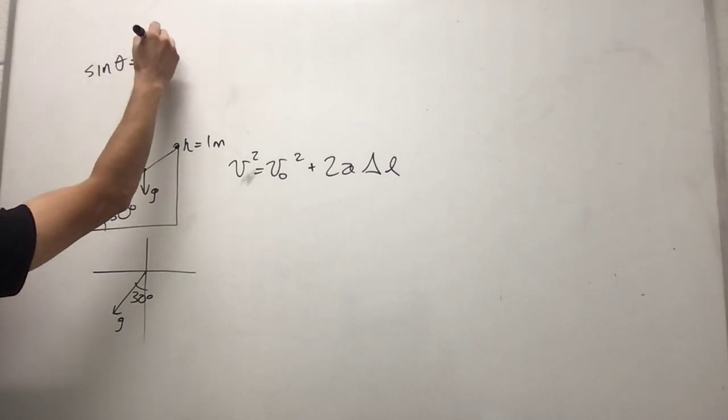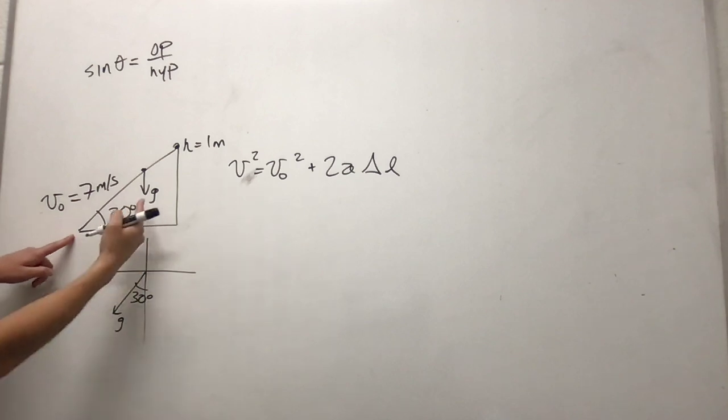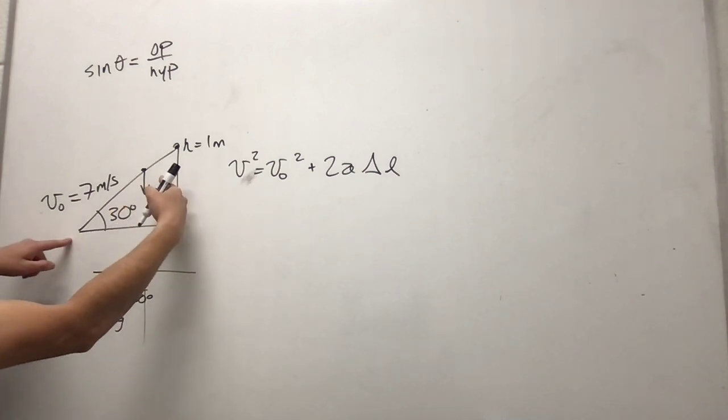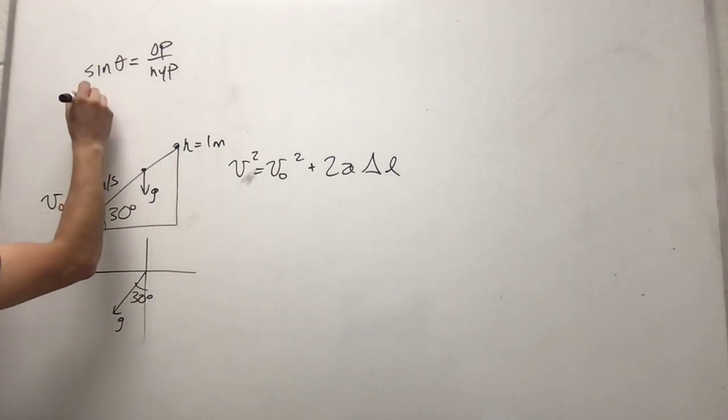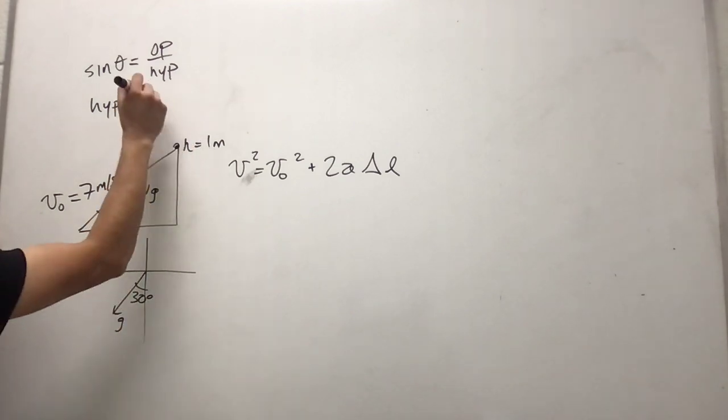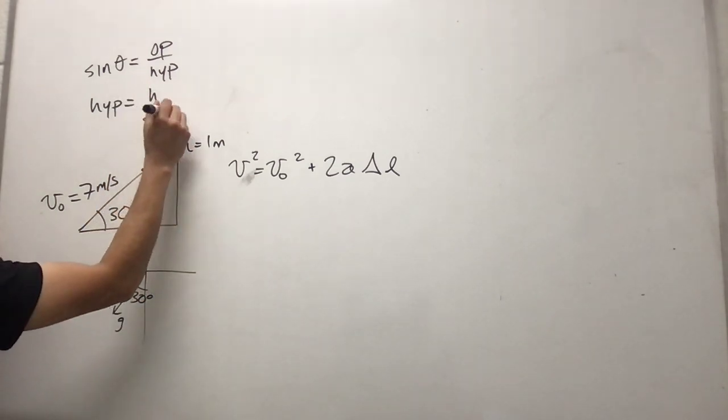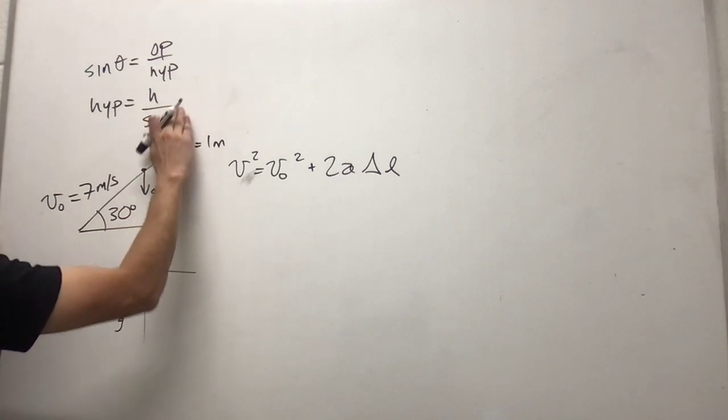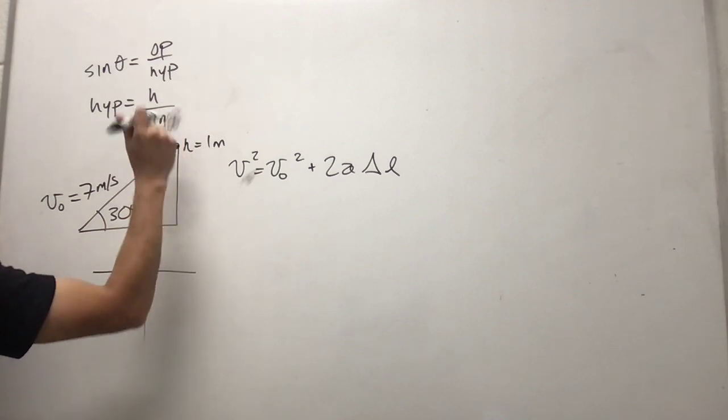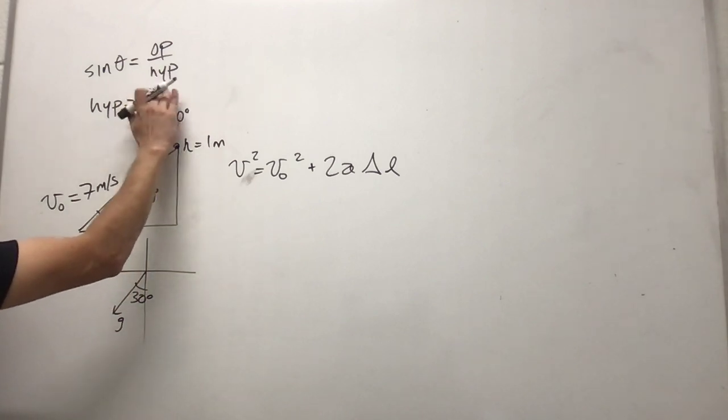We know that sine theta is opposite over hypotenuse and we basically want this hypotenuse. So that hypotenuse is h, the opposite side of this triangle angle, divided by sine of theta, sine of 30 degrees.